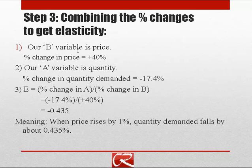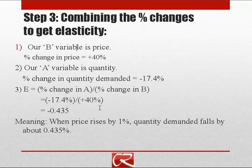Step three: combine the previous results to get the elasticity. Our percentage change in B (price) was positive 40%; our percentage change in A (quantity demanded) was negative 17.4%. Plugging those into the elasticity formula: negative 17.4% divided by 40% equals negative 0.435. This means that when prices increase by 1%, quantity demanded falls by 0.435%.